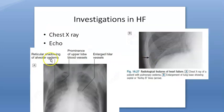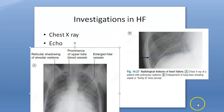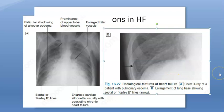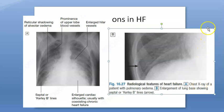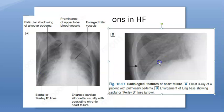Now we have to look at the treatment. We will start with investigations. You will perform a chest X-ray for all cases. In the chest X-ray you will see pulmonary edema. In image B, what they are showing is enlargement at the lung base showing septal or curly B lines.